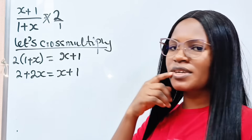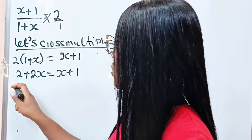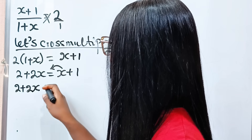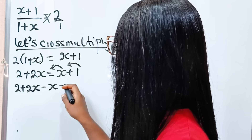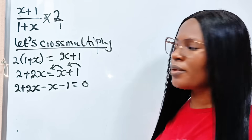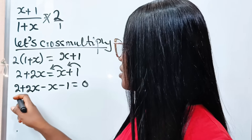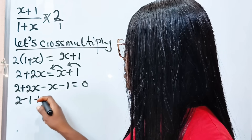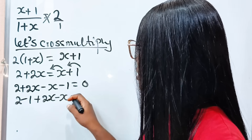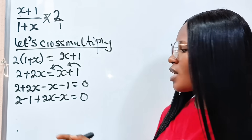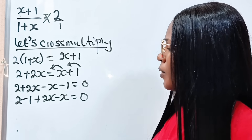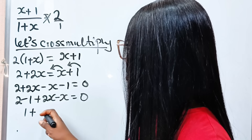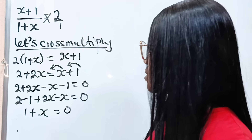Now let's transfer everything to the left-hand side. So we have 2 plus 2x. This will cross to become minus x, and this will cross to become minus 1, is equal to 0. This can be written as 2 minus 1 plus 2x minus x is equal to 0. I'm trying to group like terms — so I've just grouped like terms.